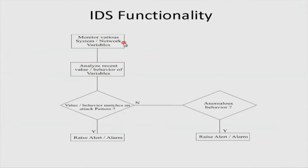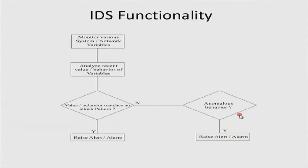A block diagram of what an IDS does: first, monitor various system and network variables; then analyze the recent behavior of those variables. If the behavior matches a particular attack pattern or signature, raise an alarm — these are signature-based IDS. Alternatively, examine whether the behavior is anomalous — a departure from the norm. If the current behavior departs from normal, raise an alert — these are anomaly-based IDS.